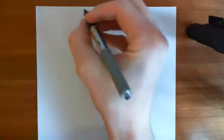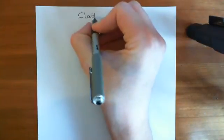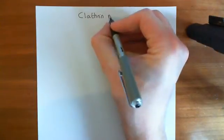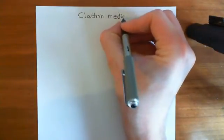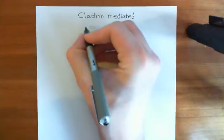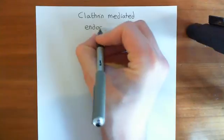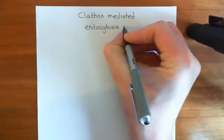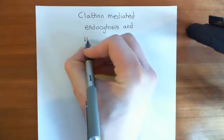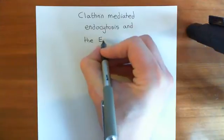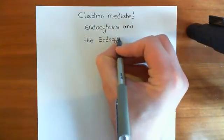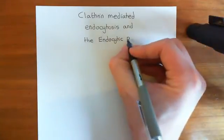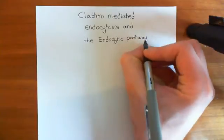Welcome to this next video in the playlist on synaptic mechanisms. In this video, we are going to talk about clathrin-mediated endocytosis and the endocytic pathway. That's the title for this video: clathrin-mediated endocytosis and the endocytic pathway, specifically looking at this process occurring in the axon terminal of neurons. We will start by looking at clathrin-mediated endocytosis — the different portions of that pathway — and then we'll look at the endocytic pathway.